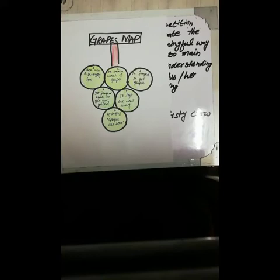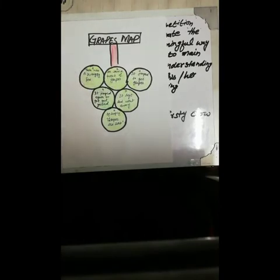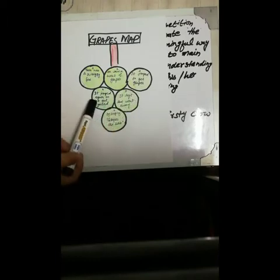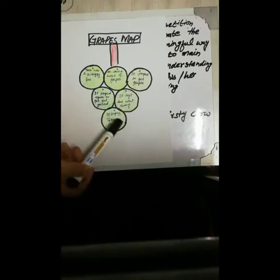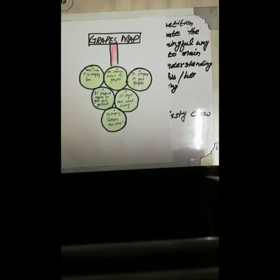Instead of writing the whole story, I have made a map to give better understanding in a short, concise way. I have reduced the irrelevant things: a hungry fox saw a bunch of grapes, jumped to get them, jumped again but failed, and left saying 'the grapes are sour.' Now the reader can understand the whole story from this map. In a summary we write in paragraphs; in a map we use diagrams.